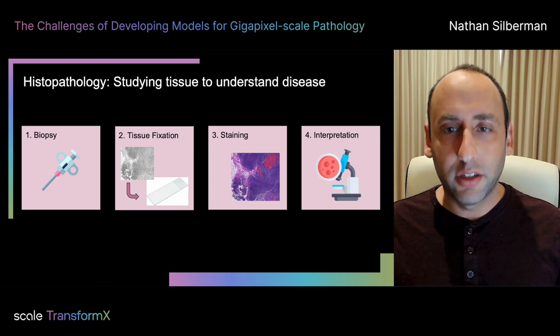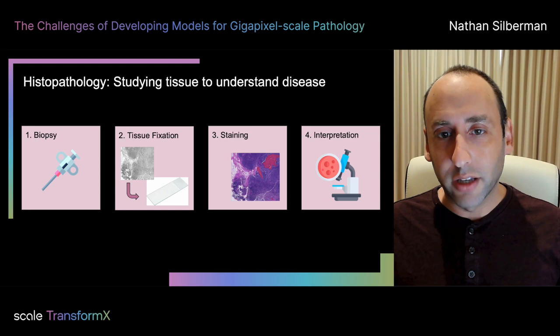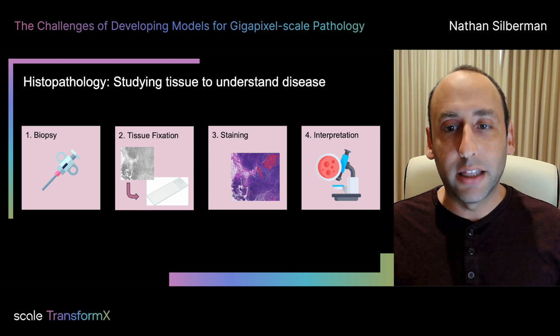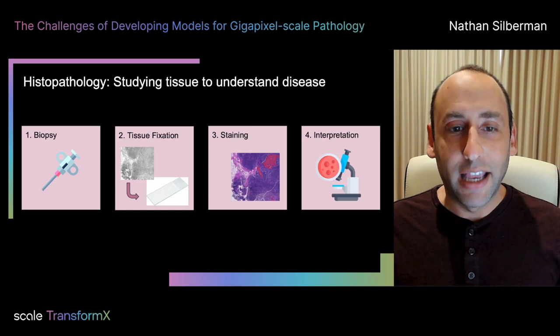Pathology samples are collected and analyzed in a four-step process. A tissue sample is extracted from someone's body. It's set onto a piece of glass and chemically treated to preserve it. It's stained with a different chemical formula that's tailored to highlight aspects of the tissue or cellular anatomy. And then finally, a human, traditionally, analyzes the tissue.